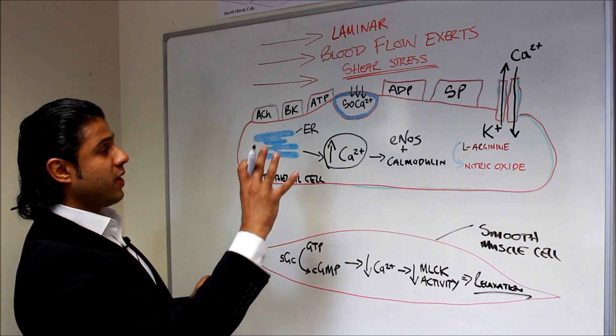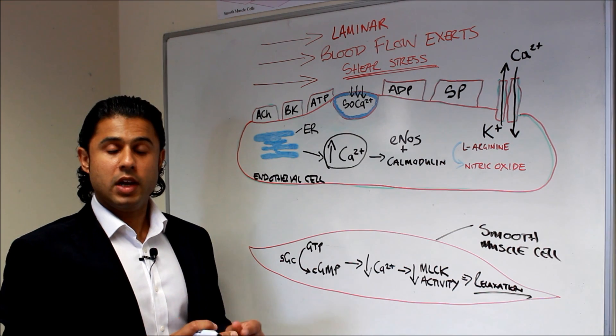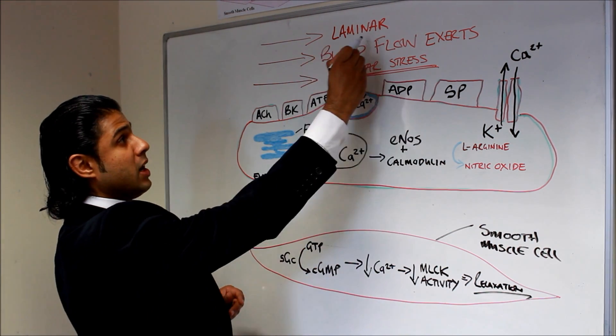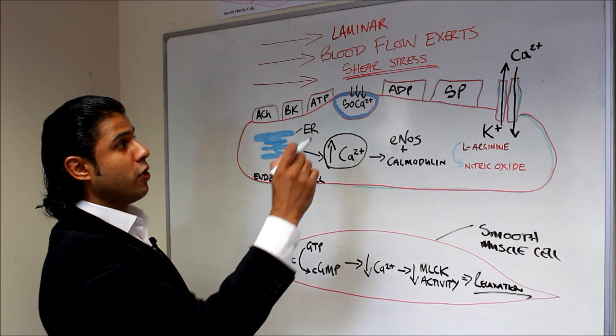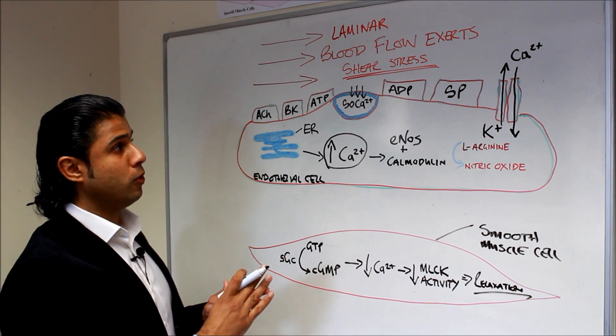Now we know that inside the blood vessel we've got blood flowing in a laminar direction, so we've got parallel, laminar basically means parallel blood flow to a particular structure. So we've got blood flowing in parallel to the vessel wall.